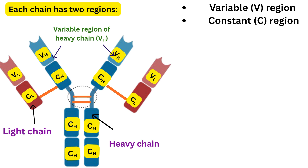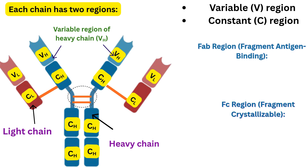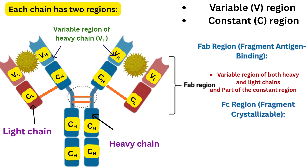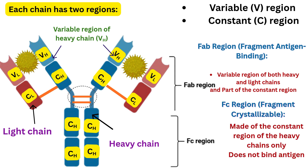Now let's understand the important components: FAB and FC region. The FAB region is formed by the variable region and part of the constant region of both the heavy and light chains. This is the region that binds to the antigen. The FC region is made up of the constant part of the heavy chain only, and this region helps in interacting with immune cells and other immune components.